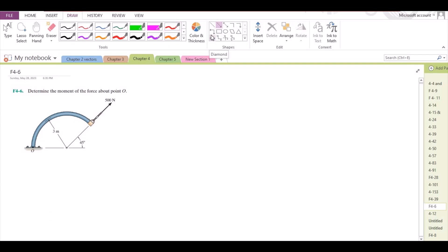To solve this problem, let us resolve this 500N force into its components. We have one horizontal component and one vertical component. This angle right here is also 45 degrees. Let us call this component 500sin45 and that component is 500cos45.